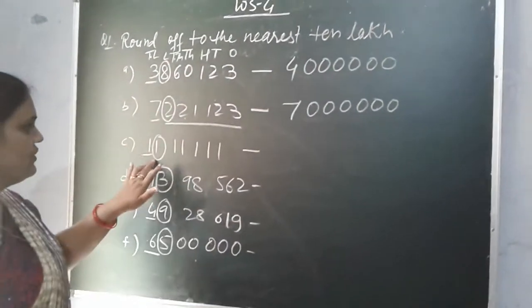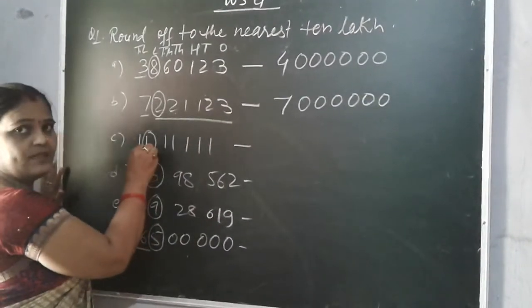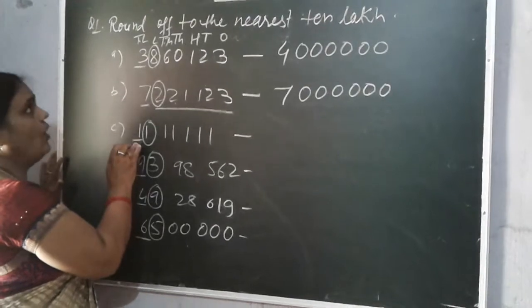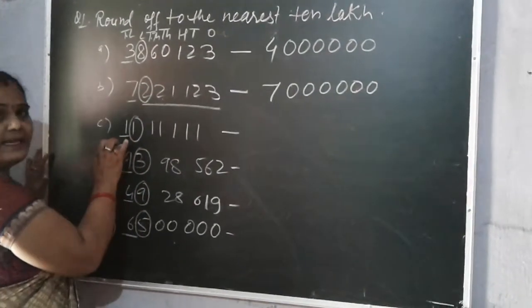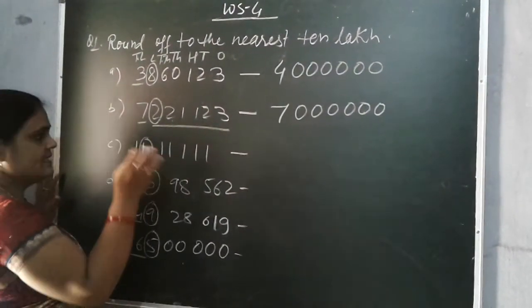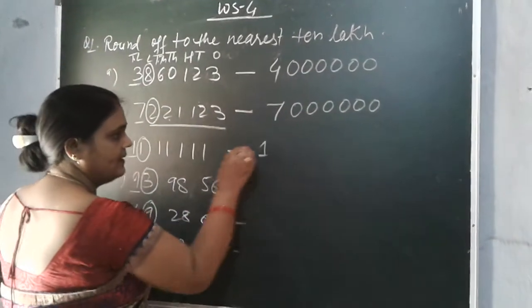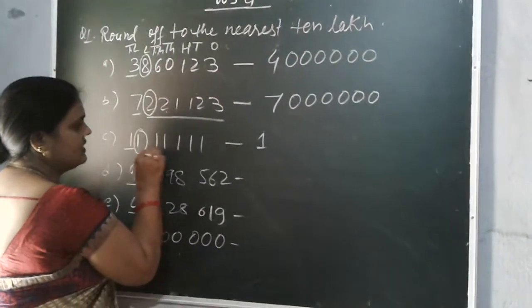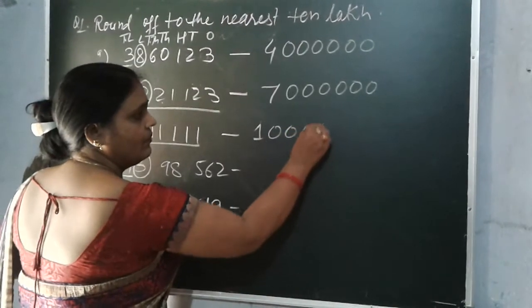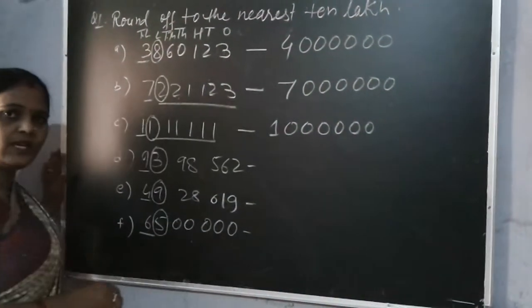Next question, children. Same way, 1 is less than 5, so again no changes on the 10 lakh digit. Same as it is, you have to write down 1 and put 6 zeros on that place — 1, 2, 3, 4, 5, 6.